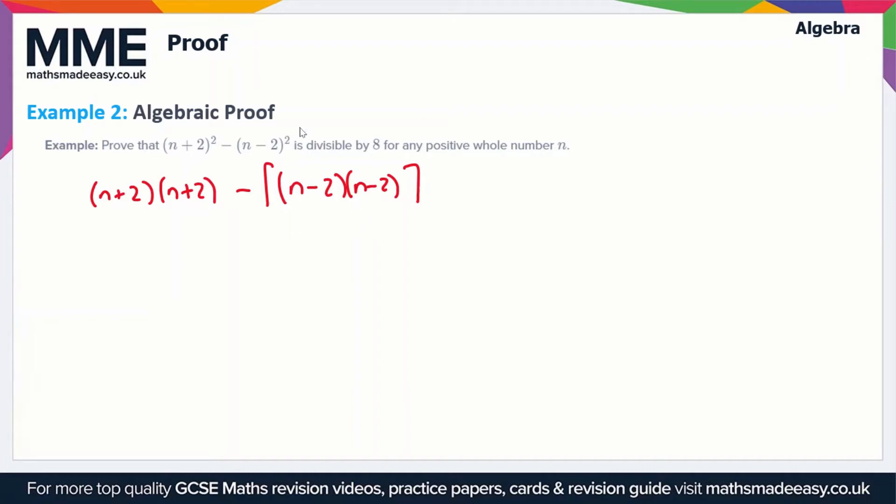I'm using square brackets here because we've got some minuses in these double brackets and we're subtracting the whole set. It's going to get confusing if we don't use more brackets. That'll become clear in a second.